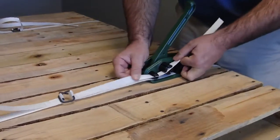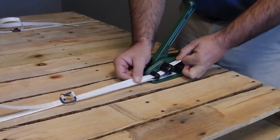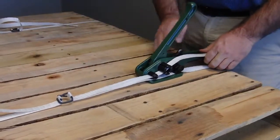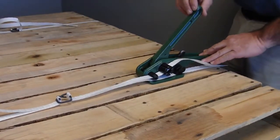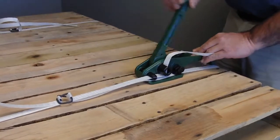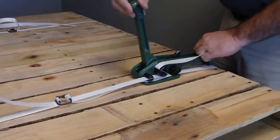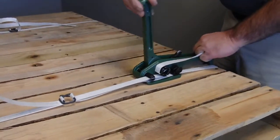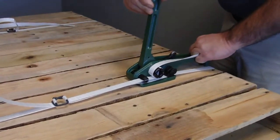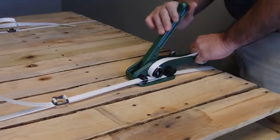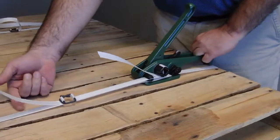Place that in position on the tool, have it snug against the back end of the tool, and then proceed to tension the strap. By simply pushing the lever forward, it applies tension to the buckle and to the load.